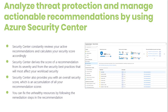Security Center limits the work of a security analyst by reviewing your security recommendations and applying advanced algorithms to determine how to prioritize them. Security Center constantly reviews your active recommendations and calculates your security score based on them. The score of a recommendation is derived from its severity and from security best practices that will affect your workload security the most. Security Center also provides an overall score, which is an accumulation of all your recommendation scores. You can view your overall score across your subscription or management group, and it varies based on the selected subscription and active recommendations.